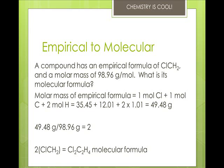So it's got 98.96 grams per mole, and we know that the molar mass is 1 mole of chlorine plus 1 mole of carbon plus 2 moles of hydrogen. So that gives us a total of 49.48 grams for 1 mole of this compound. So we take that 49.48 grams divided into 98.96, and that gives us 2. So we multiply that times the empirical formula, and we get Cl2C2H4 as the molecular formula.